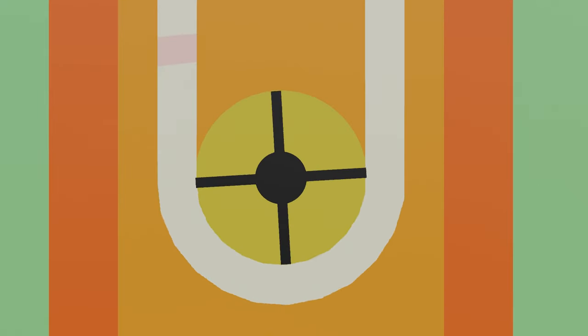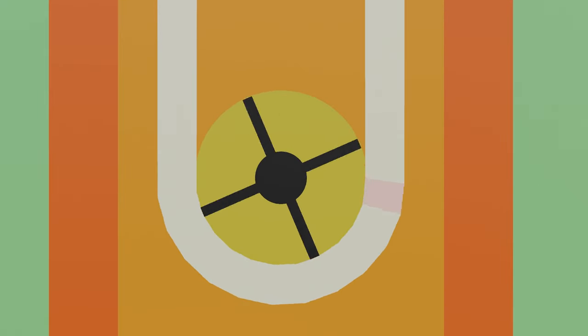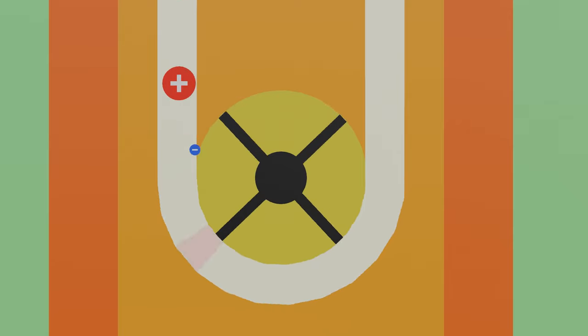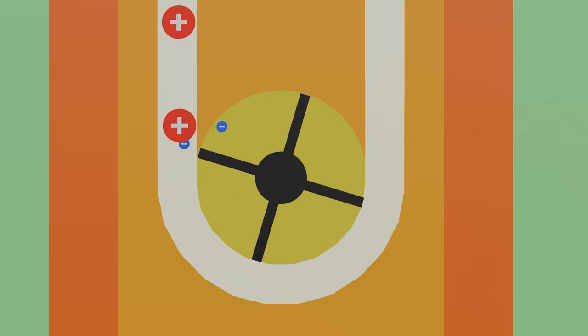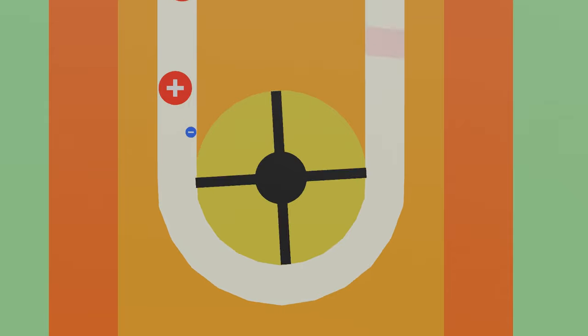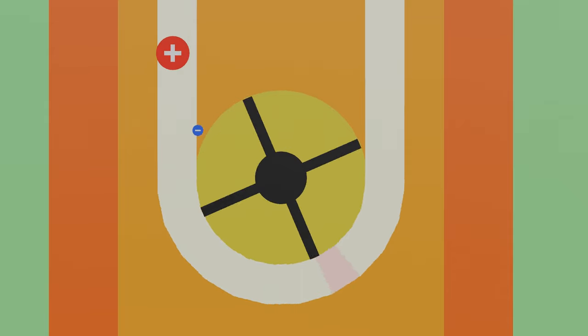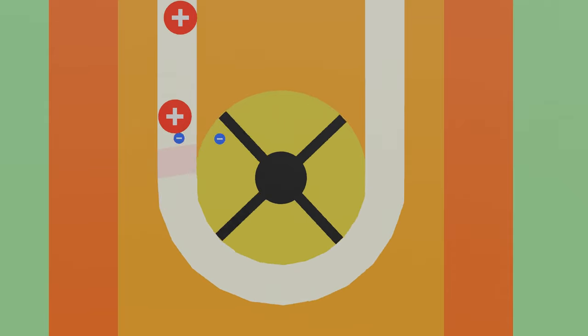When the rubber belt rubs across the bottom roller, electrons are torn away from the belt and stick to the surface of the roller. This is because the roller is made up of materials such as Teflon, which is lower down on the triboelectric series.